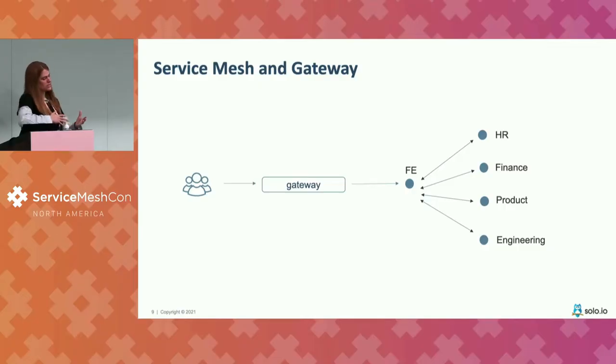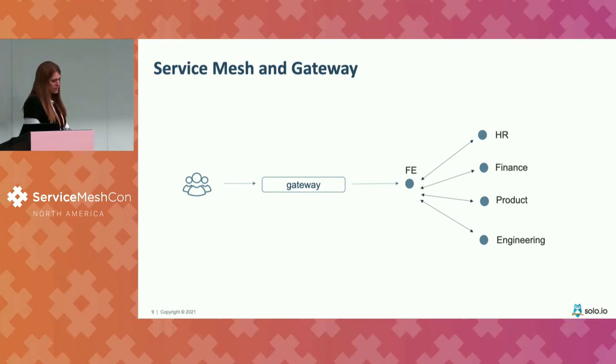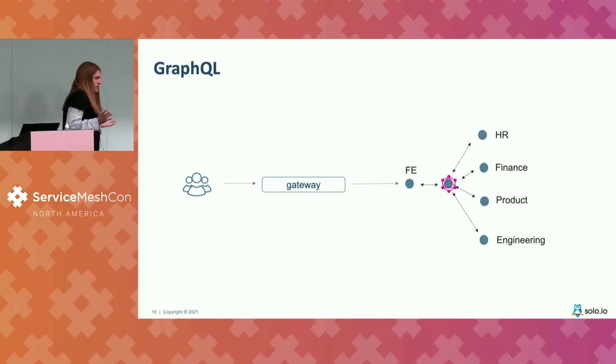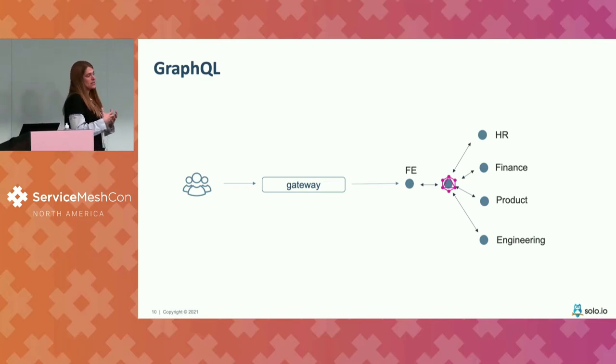There is a request coming into your cluster, hitting some gateway, going to a service - maybe a front-end or UI service. In that UI microservice you have a lot of code that needs to aggregate data from all those connected microservices. For example, you might want to ask: give me all the engineers at Solo working on Gloo Mesh earning less than $200k. That means you need to go to the engineering service, the product service, the finance service, HR, and basically make those calls and return the result. That's where GraphQL comes in.